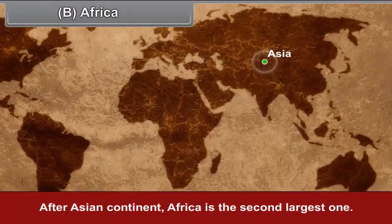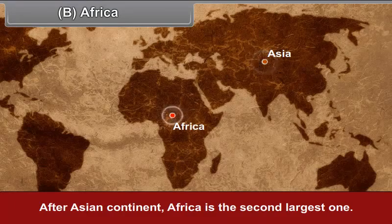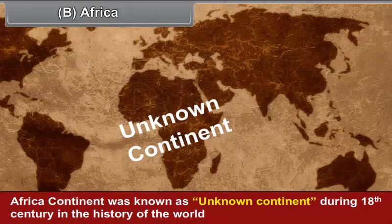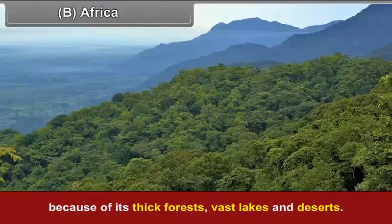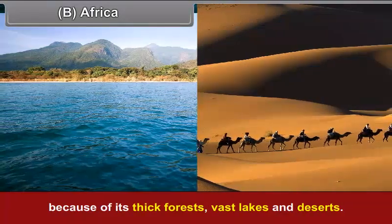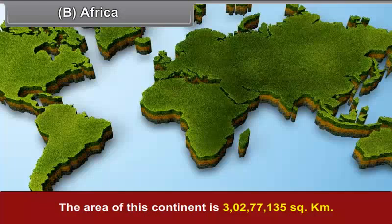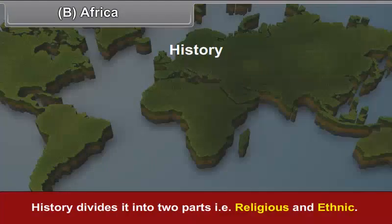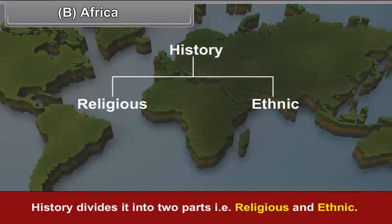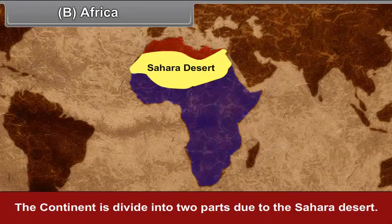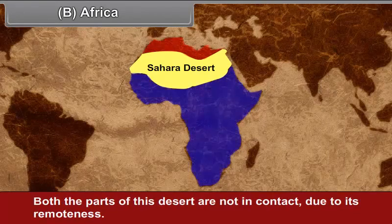After the Asian continent, Africa is the second largest one. The African continent was known as the unknown continent during the 18th century because of its thick forests, vast lakes and deserts. The area of this continent is 3 crores 2 lakhs 77,135 square kilometers. History divides it into two parts — religious and ethnic. The continent is divided into two parts due to the Sahara Desert, and both parts are not in contact due to its remoteness.